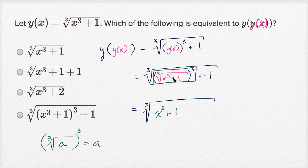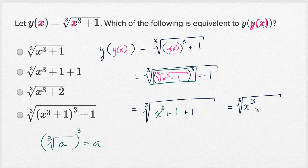The cube root of x to the third plus one, to the third power, is just going to be x to the third plus one. And then we have the plus one. So this is going to be equal to the cube root of x to the third plus two, which is that choice right over there.